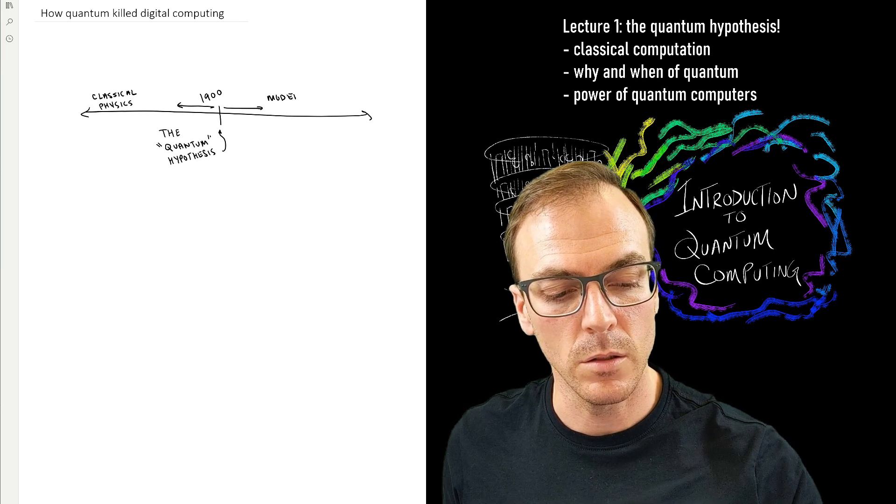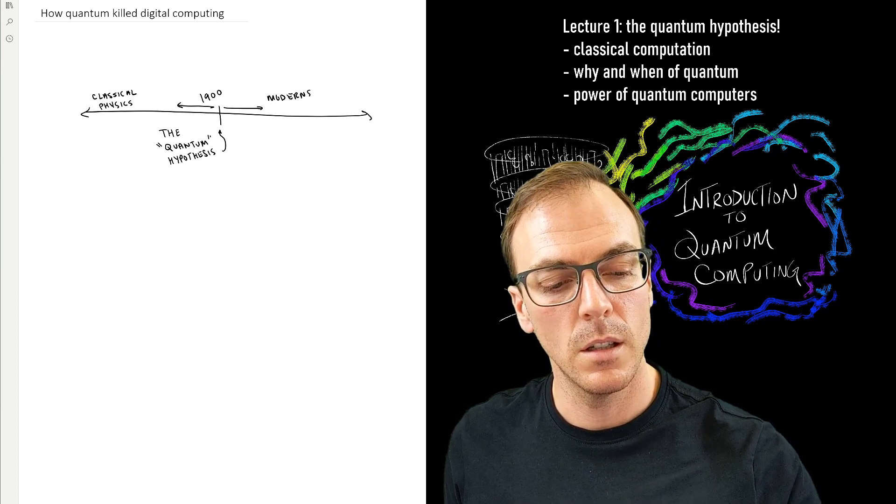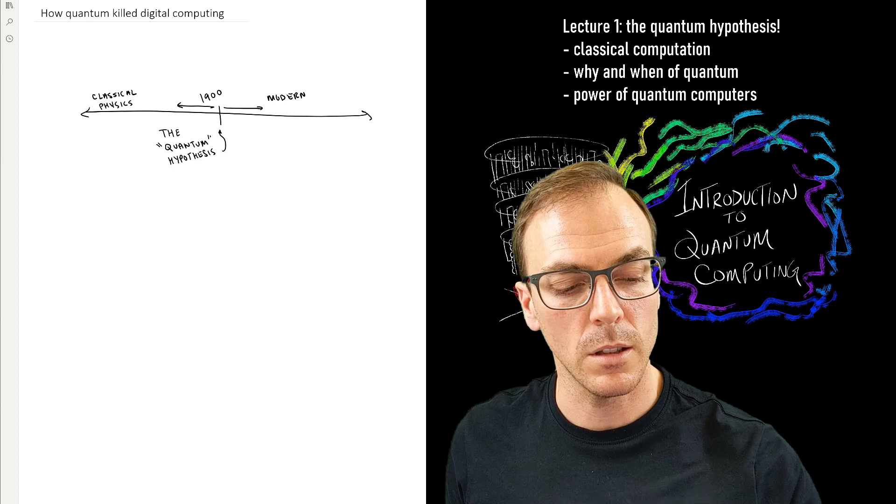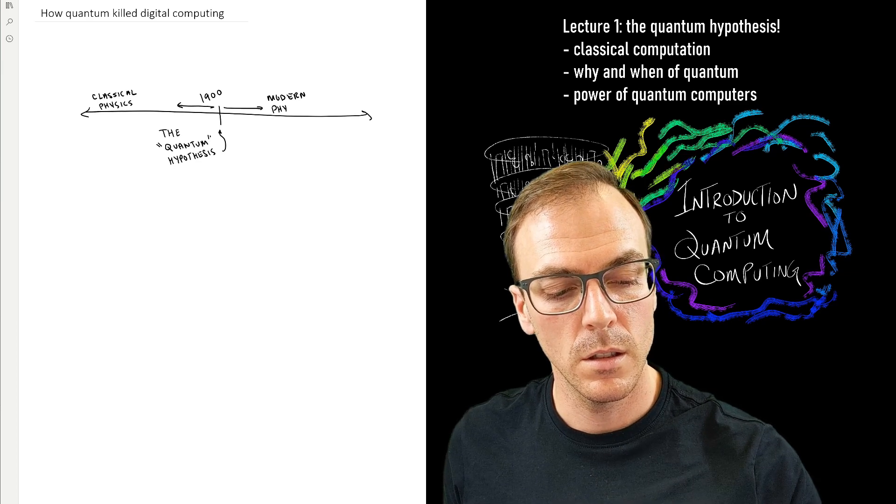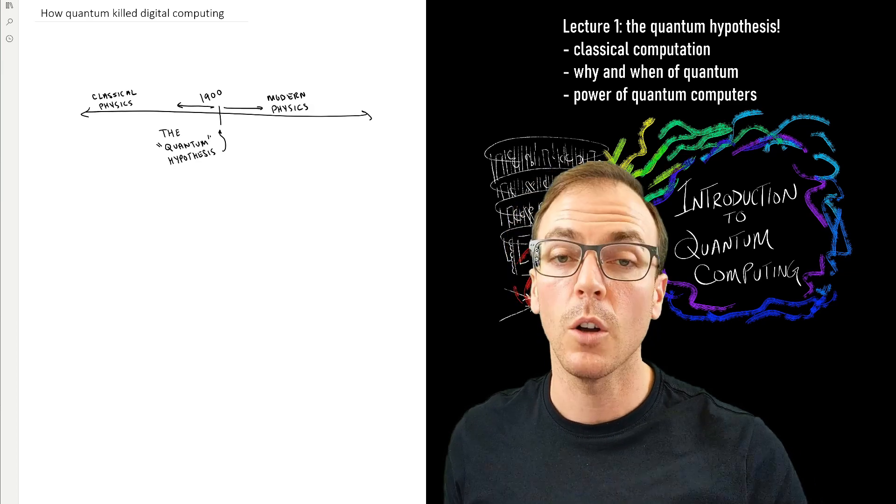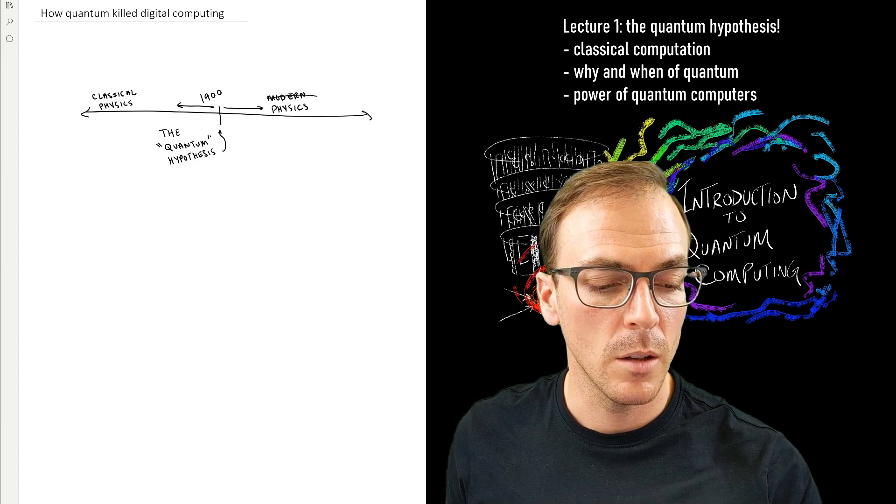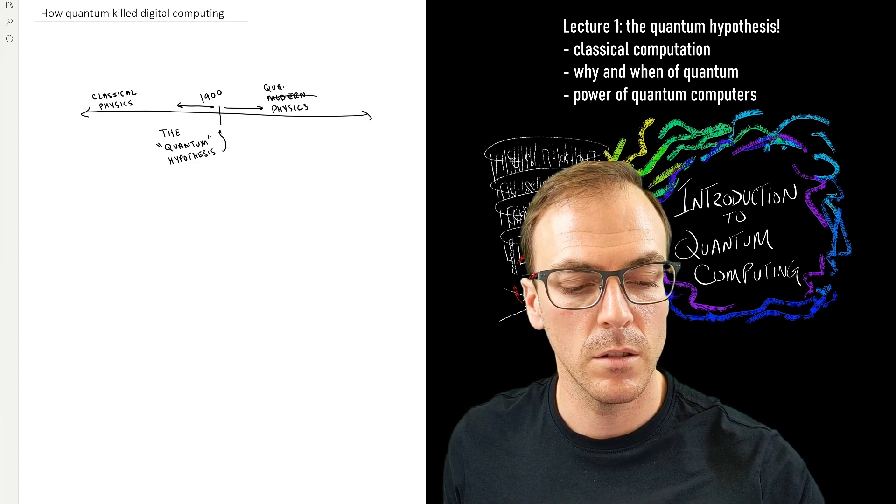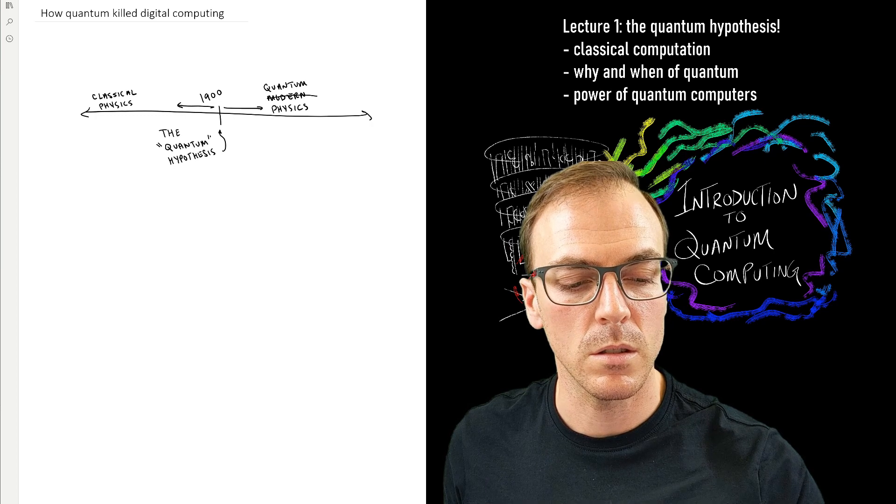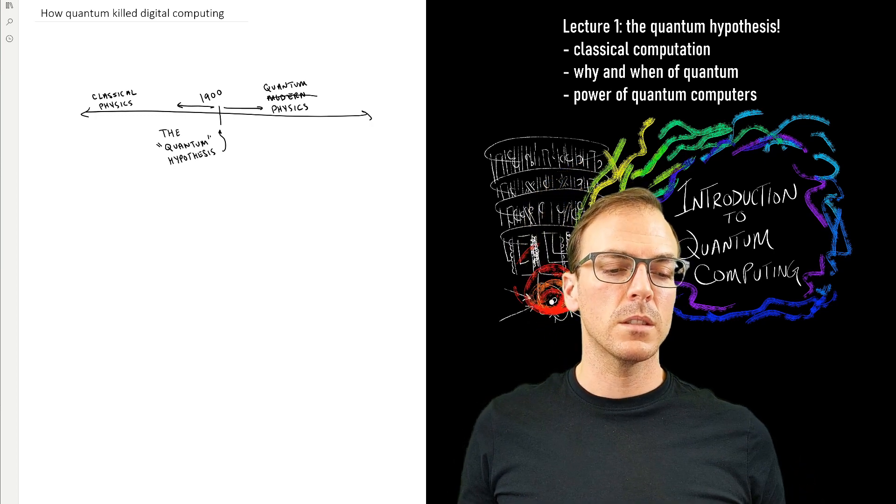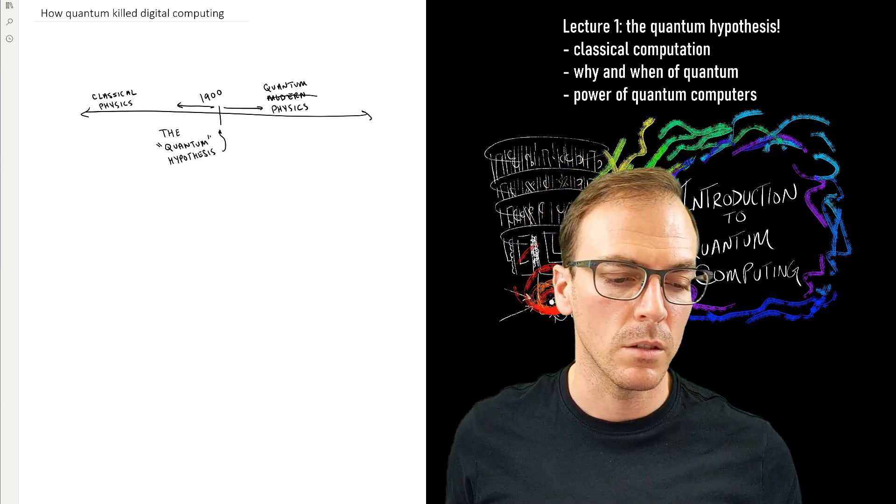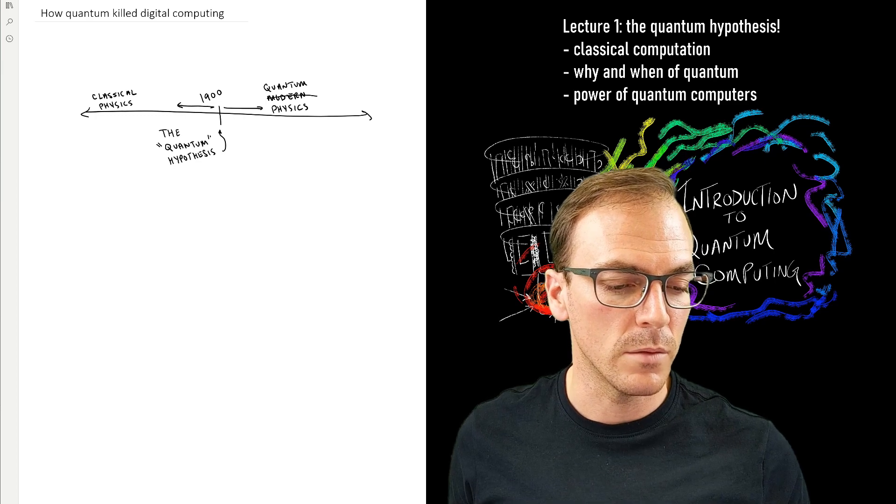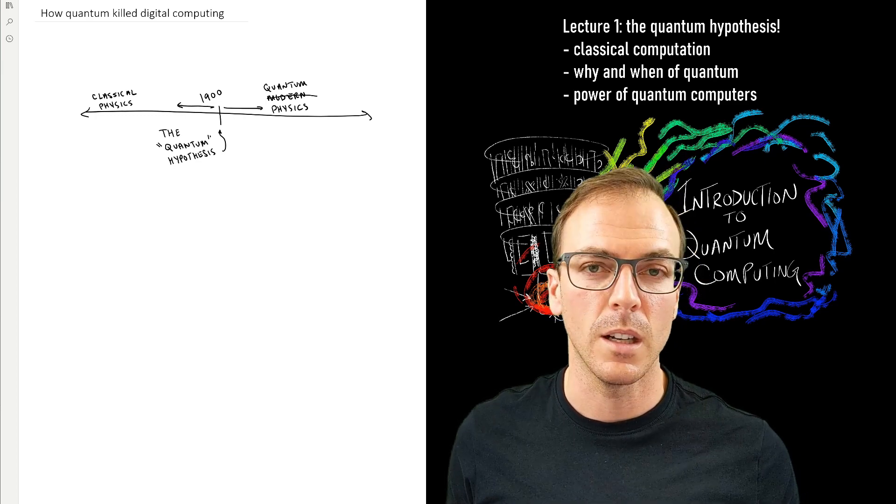And modern physics includes quantum physics, of course, but also general relativity. But let's not consider general relativity in this course since, so far as I know, nobody's come up with the idea of using gravitation or spacetime to do computations, at least not in any practical sense.